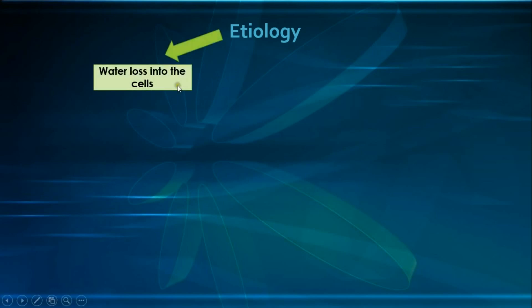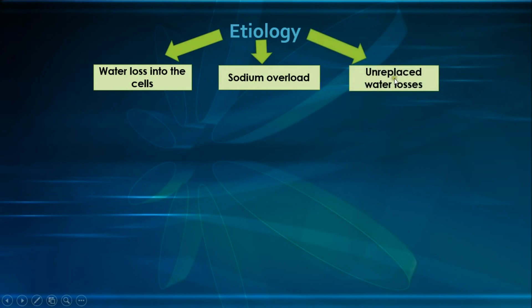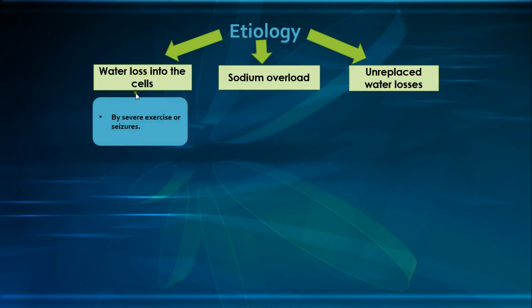Moving to the etiology and classification: the first category is water loss into the cells, the second is sodium overload, and the third is unreplaced water losses — the most common category. Water loss into the cells, as seen in severe intense exercise or seizures, occurs because cells break down glycogen into smaller, more osmotically active molecules, drawing water into the cells and leaving the extracellular compartment hyperosmolar.